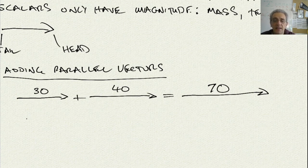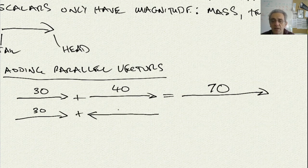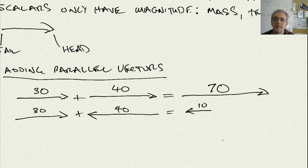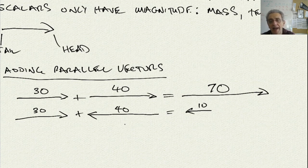On the other hand, if we had a vector that was 30, plus another vector that is 40 in the opposite direction, this vector would now be 10 in the left direction. Notice where the head and tail are. These vectors are parallel to each other, and it's simply like adding and subtracting numbers. This is like saying 30 plus 40 is 70; this is like saying 30 plus negative 40 is negative 10 — so it would be to the left.